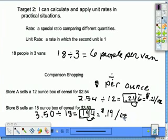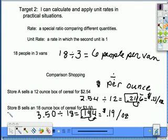So if I can compare by the ounce, Store A is really selling me 21 cents per ounce. Store B is selling it at only 19 cents per ounce. So Store B has the better buy.